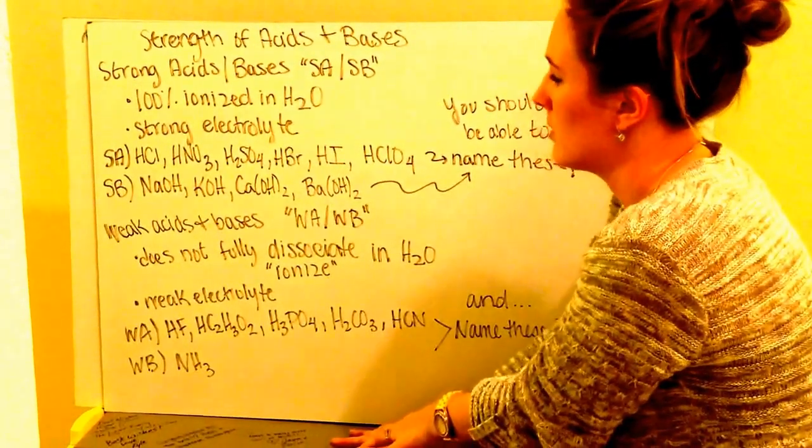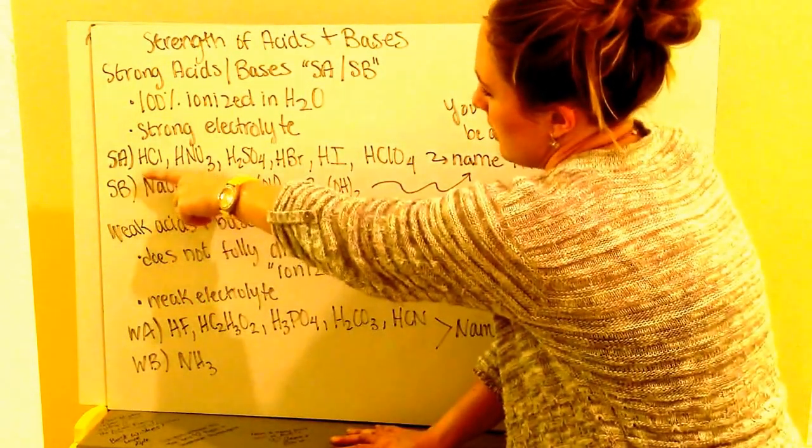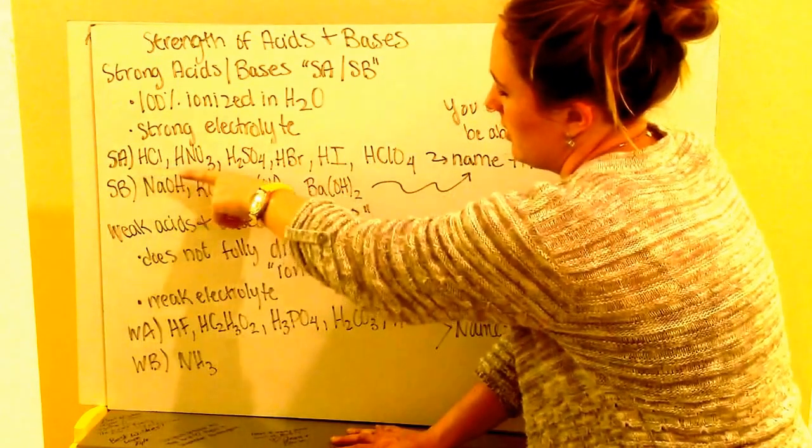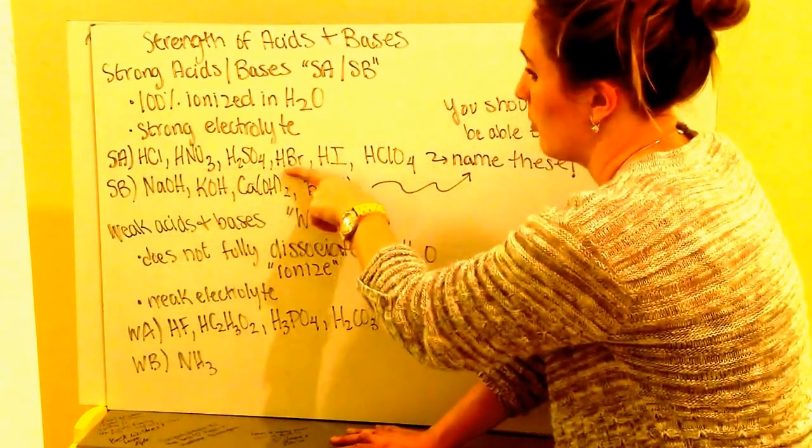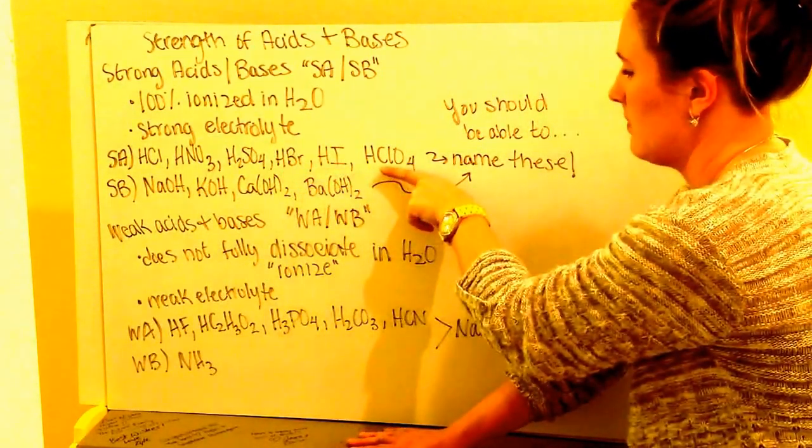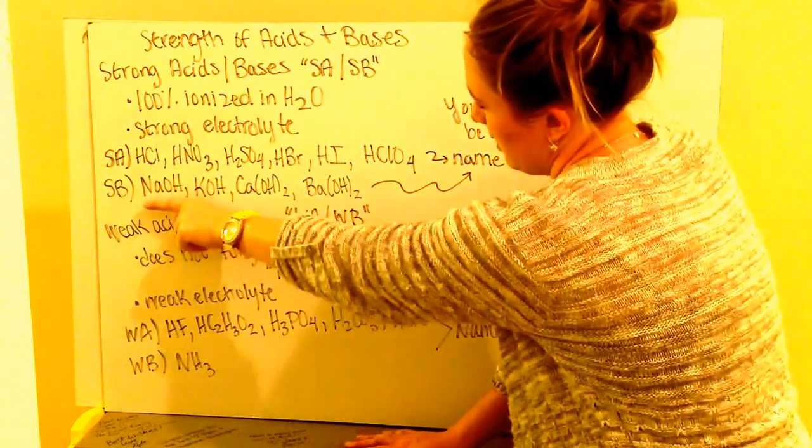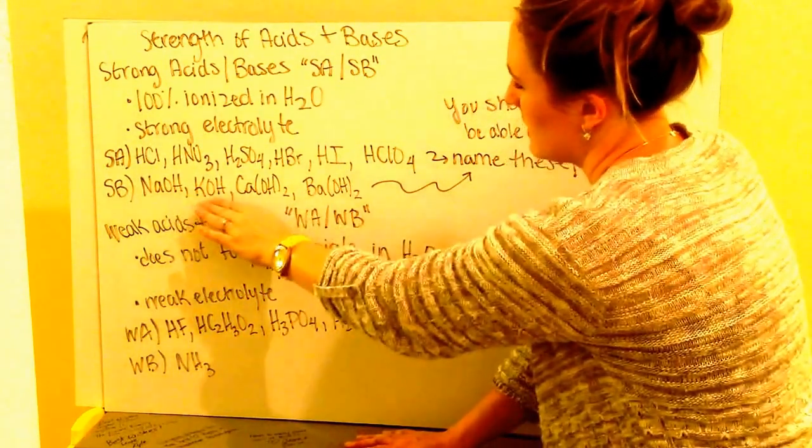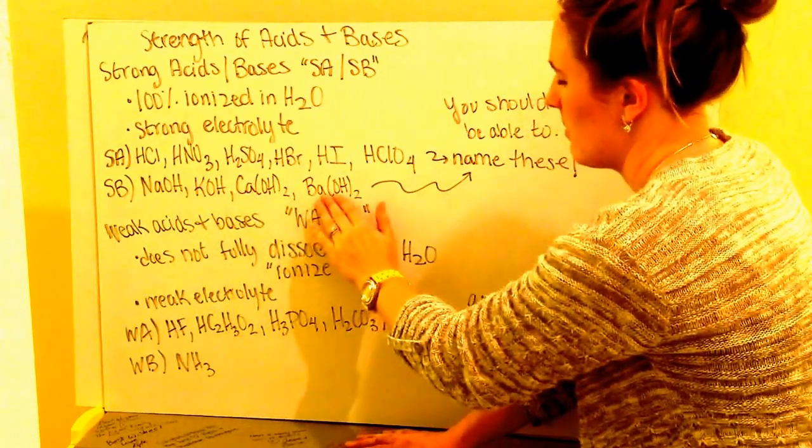So they're going to be able to conduct electricity well. Some examples of strong acids are hydrochloric acid, nitric acid, sulfuric acid, bromic acid, iodic acid, and chloric acid. Strong bases include sodium hydroxide, potassium hydroxide, calcium hydroxide, and barium hydroxide.